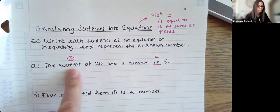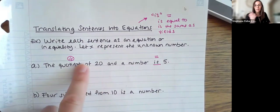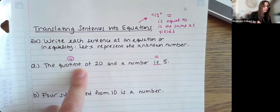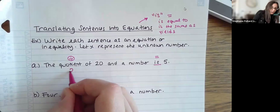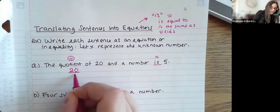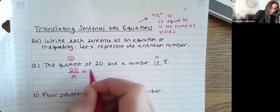For quotient, I'm going to do this in order. Again, there's really no other keywords happening here. It just says the quotient of 20 and a number. So I can write it like this. The quotient, meaning I'm dividing 20 and a number, is equal to 5.